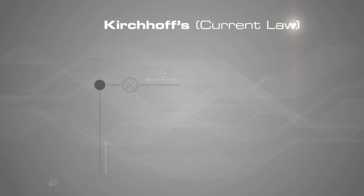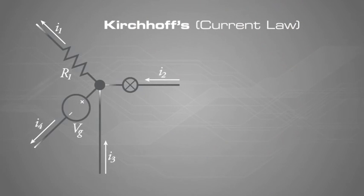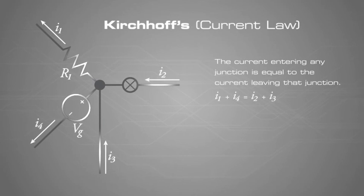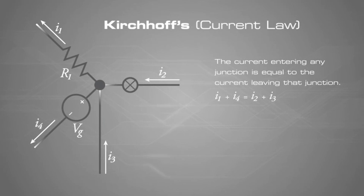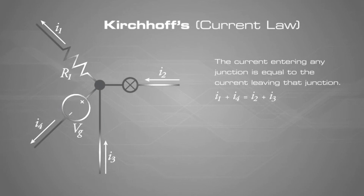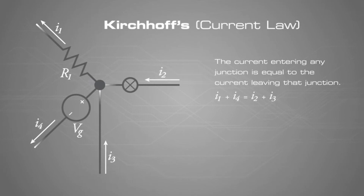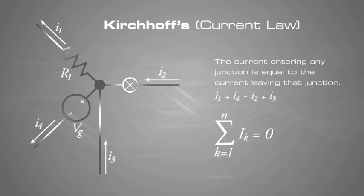Kirchhoff's current law, the principle of conservation of electric charge, implies that at any node or junction in an electrical circuit, the sum of currents flowing into that node is equal to the sum of currents flowing out of that node, or the algebraic sum of currents in a network of conductors meeting at a point is zero.